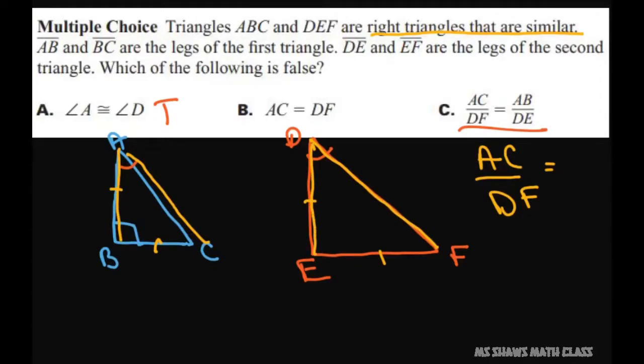So the one that's false is AC equals DF. These aren't equal because this side can be bigger.